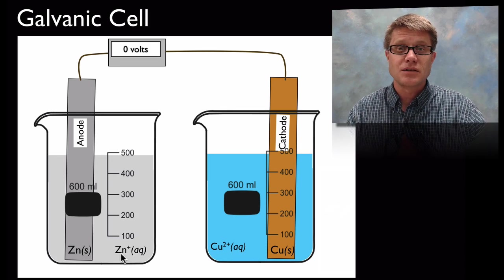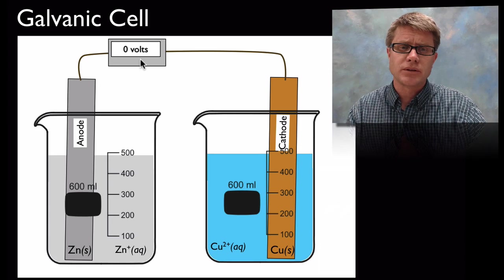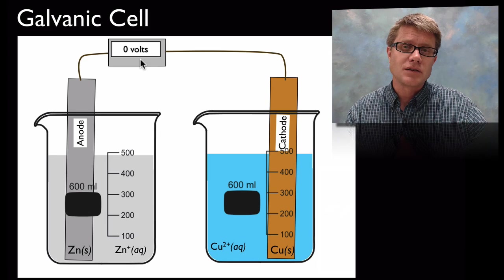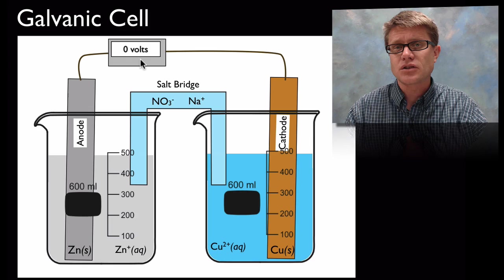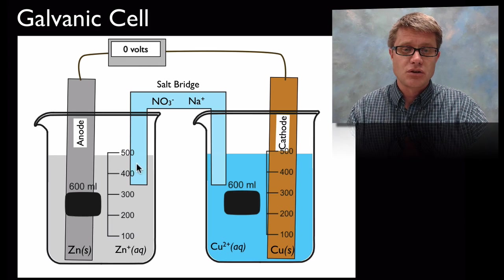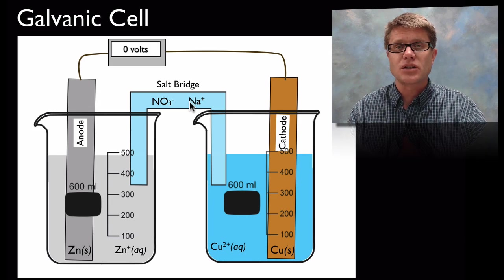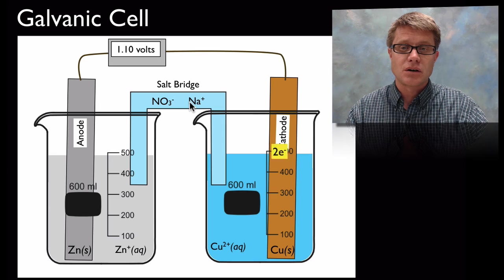And if we just let it sit like this nothing will happen. In other words it's not going to generate any voltage if we had a little voltmeter here up at the top. And the reason why is that we haven't completed the circuit. And so to do that we're actually going to have to add a salt bridge. A salt bridge is going to be filled lots of times with a gel. In this case we've got sodium nitrate. And what it's going to do is it's going to allow the ions to actually flow.